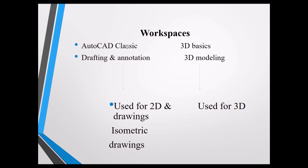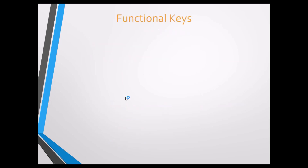In AutoCAD there are four workspaces: AutoCAD Classic, Drafting and Annotation, 3D Basics, and 3D Modeling. The first two workspaces are used to draw 2D and isometric figures, whereas 3D Basics and 3D Modeling are used to draw 3D figures.